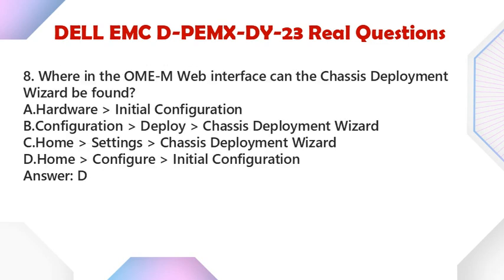Question 8: Where in the OMEM web interface can the chassis deployment wizard be found? A. Hardware, Initial Configuration. B. Configuration, Deploy, Chassis Deployment Wizard. C. Home, Settings, Chassis Deployment Wizard. D. Home, Configure, Initial Configuration. Answer: D.